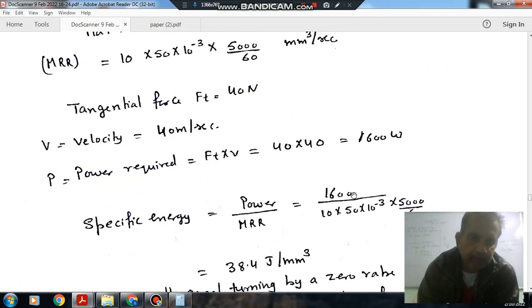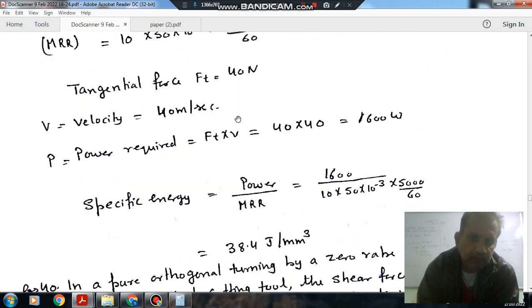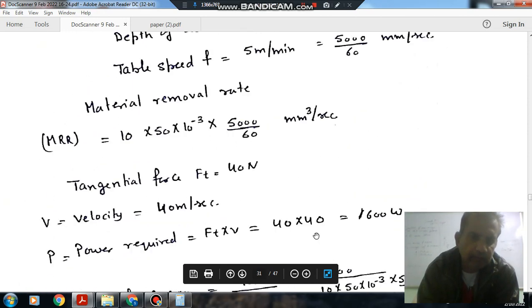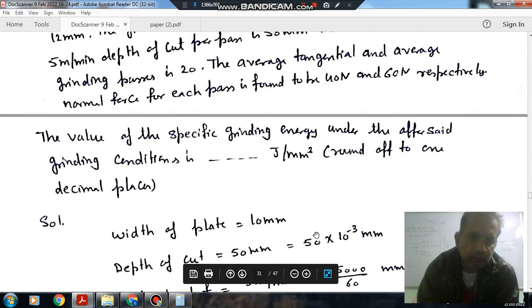Power is tangential force times velocity, which gives us 1600 Watts. Metal removal rate is calculated from the previous step. So power divided by metal removal rate gives us the specific energy.